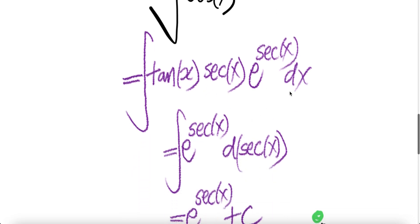Now we can write this tangent x sec x pushed into dx as derivative of sec x. The derivative of sec x is sec x tangent x dx. So sec x tangent x dx is this piece.